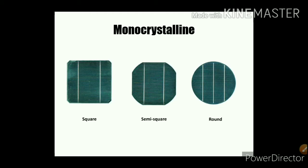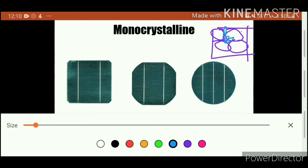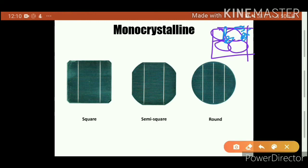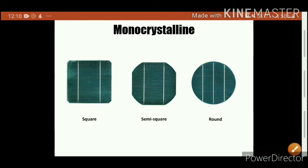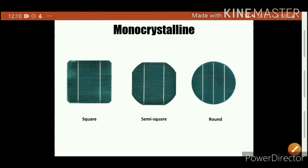Despite being cheaper, round solar cells are rarely used in standard modules because when they are placed next to each other in a module, they do not use the space efficiently. If you place round cells in a panel, there is wasted space between them. On the other hand, if you replace them with square-shaped cells, then each cell very effectively covers the entire area, and automatically the efficiency will be improved.